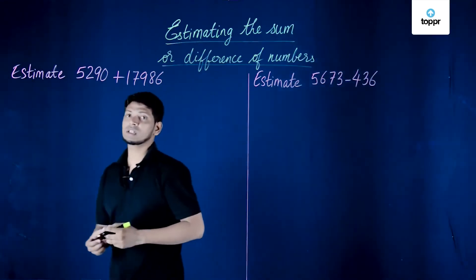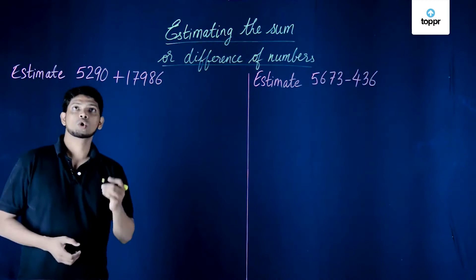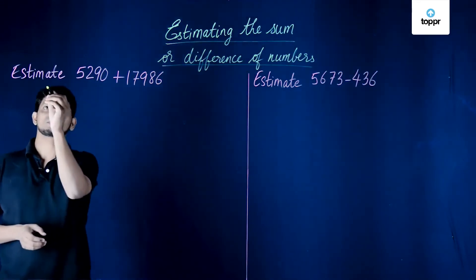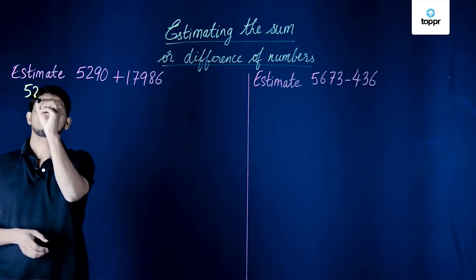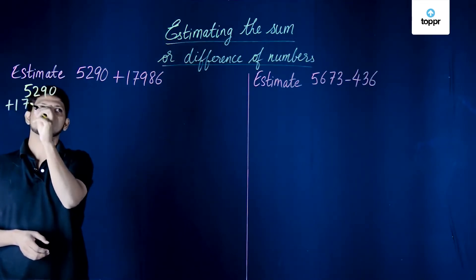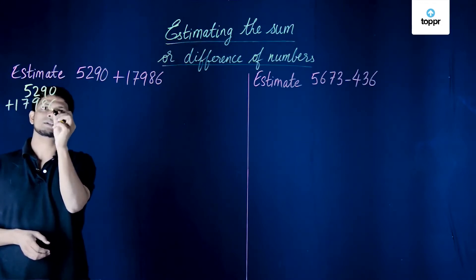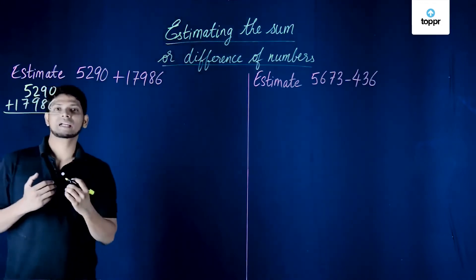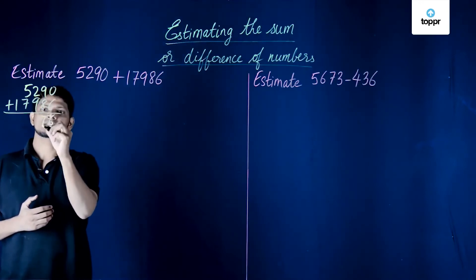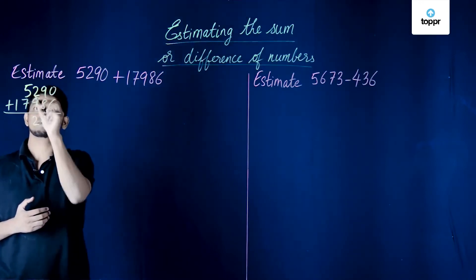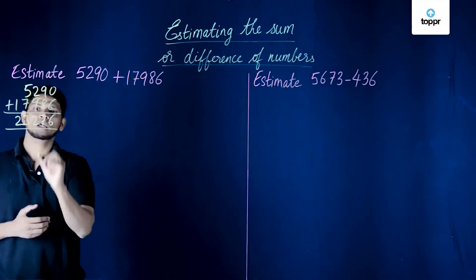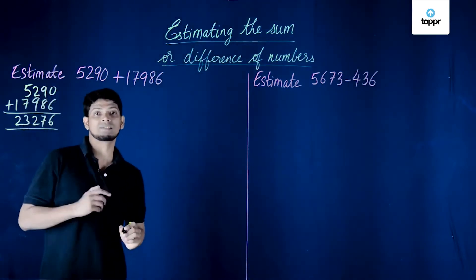First we will start with estimating the sum. If we directly do a normal addition of 5290 plus 17986, working through each column with carries, we get the actual answer of 23,276.